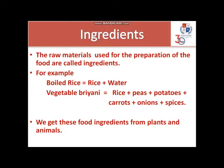The raw materials used for the preparation of food are called Ingredients. For example, boiled rice needs few ingredients, while Vegetable Biryani needs a few more ingredients. These raw materials are responsible for giving different tastes to a particular dish.